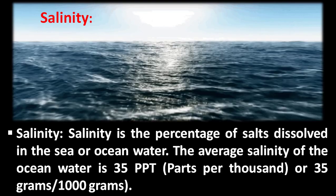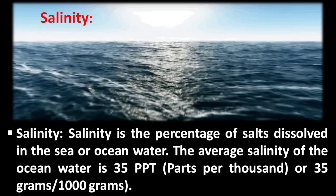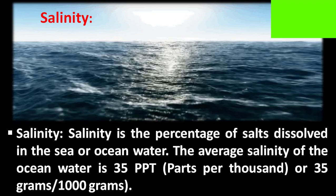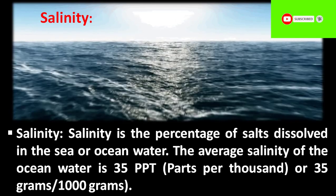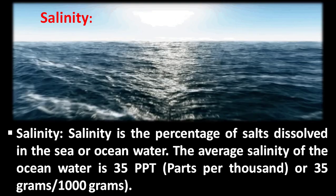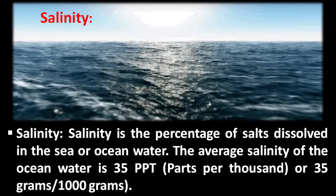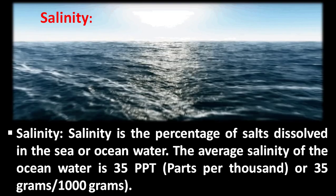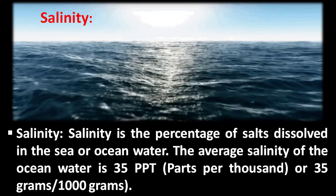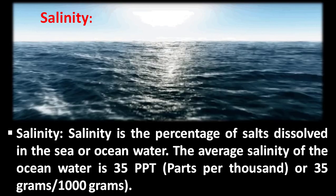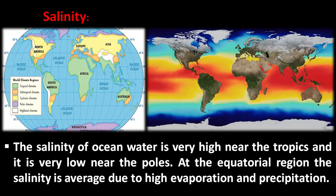The concept of salinity: salinity is the percentage of salts dissolved in the sea or ocean water. The average salinity of the ocean water is 35 ppt — that is, 35 grams per 1000 grams.